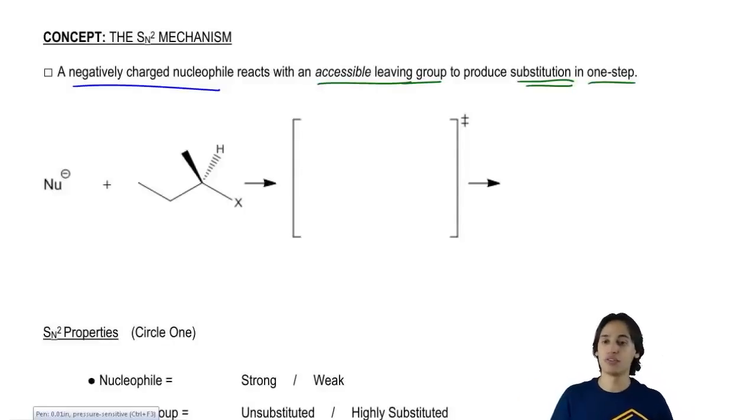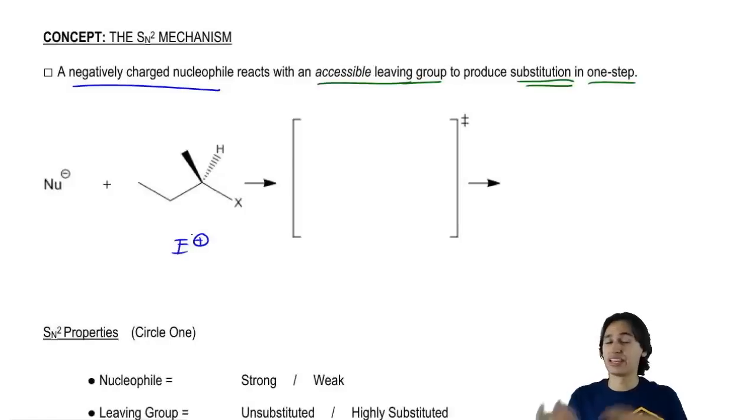So I have this nucleophile that I'm just generally putting as NU negative. There's a lot of different nucleophiles out there. It doesn't really matter the identity right now. Now I have to figure out I'm reacting with an alkyl halide. What did I say alkyl halides were good at? Leaving. So what that means is I have to figure out what's the electrophilic part of this molecule because this is my electrophile. And what is it going to look like after it reacts?